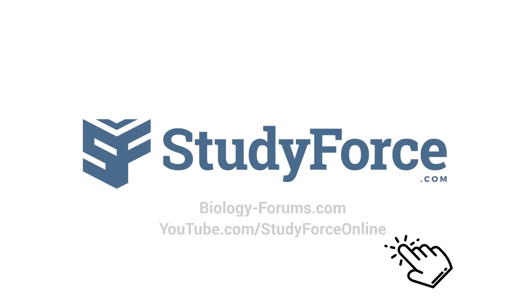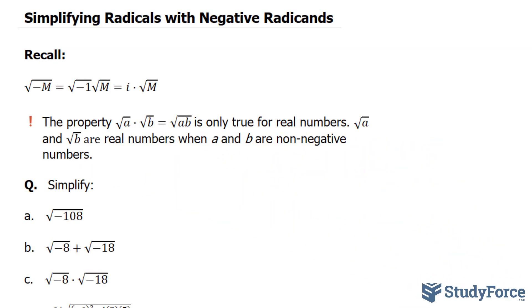In this lesson, I'll show you several examples on how to simplify radicals with negative radicands. In case you forgot, the radicand is the part that goes within the radical, and if a radical has a number out here, that's called the index.